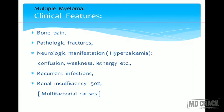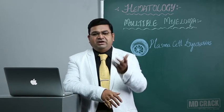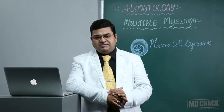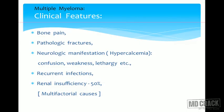Clinical features of multiple myeloma include bony pain and pathological fractures - where even minimal trauma causes a fracture. At the fracture site, bone marrow biopsy will show plenty of plasma cells. Neurological manifestations can occur mainly due to hypercalcemia, since excessive calcium is released through osteolysis. Raised serum calcium causes confusion, weakness, and lethargy. These patients are prone to recurrent infections because the monoclonal immunoglobulins synthesized are not useful for fighting infections.